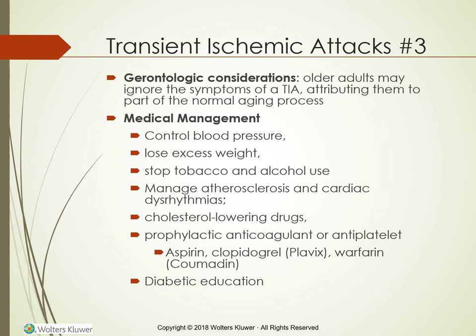Therapy for clients who have had a TIA or are at high potential for a stroke is complex. Clients must control their blood pressure with or without medications, lose excess weight, and stop tobacco and alcohol abuse. To manage atherosclerosis and consequences of cardiac arrhythmias — especially atrial fibrillation — cholesterol-lowering drugs and prophylactic anticoagulant or antiplatelet therapy are generally prescribed, including aspirin, Plavix, warfarin, Persantine, and Pradaxa. Those with diabetes must be taught techniques to control blood sugar within normal ranges with diet, exercise, and medications.